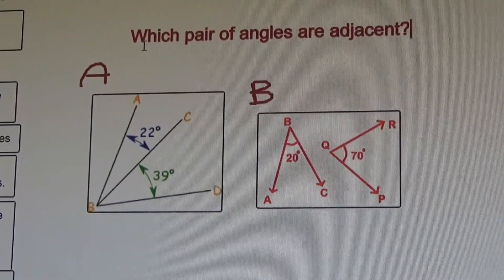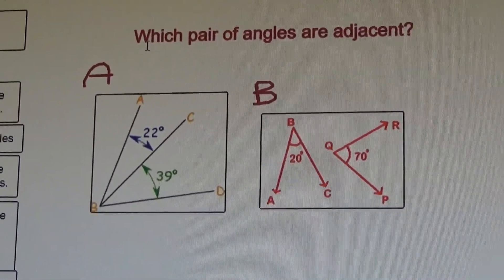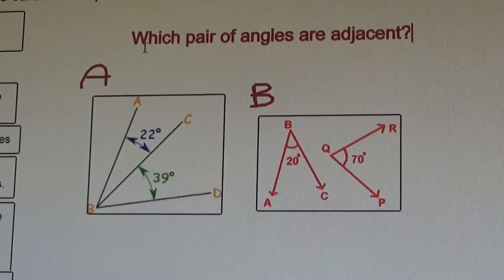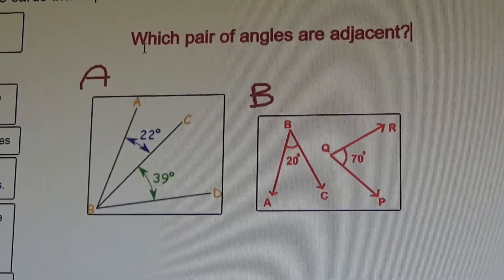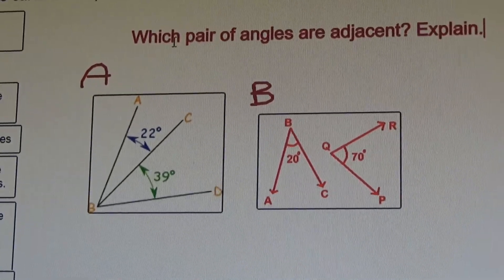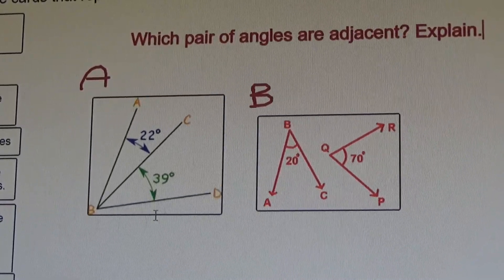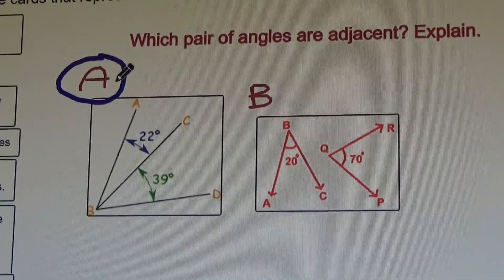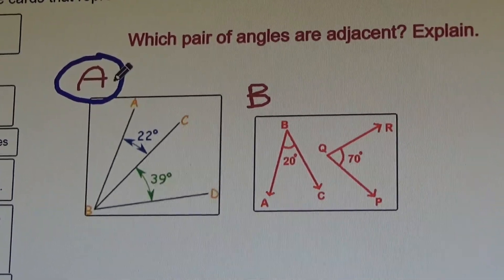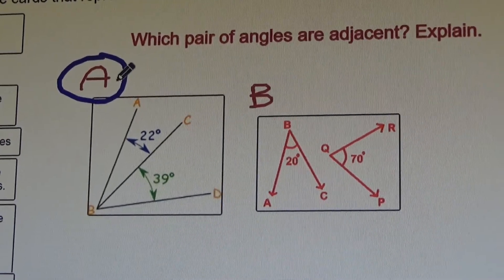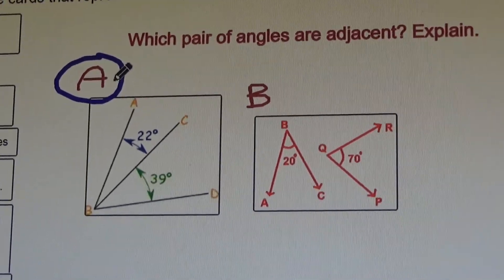A little practice. Which pair of angles are adjacent, and explain? Let's pause here to reflect and write your answer to the question, then press play to continue. That's right — Choice A. These angles are adjacent. Why? Let's pause here to reflect and write your answer to the question, then press play to continue.